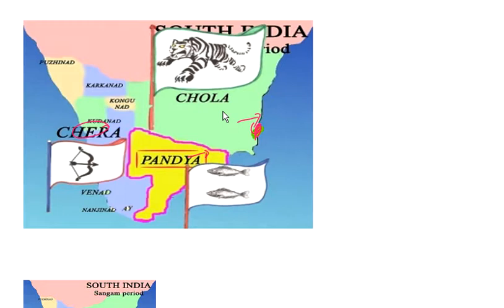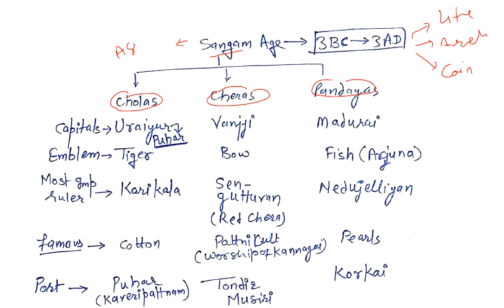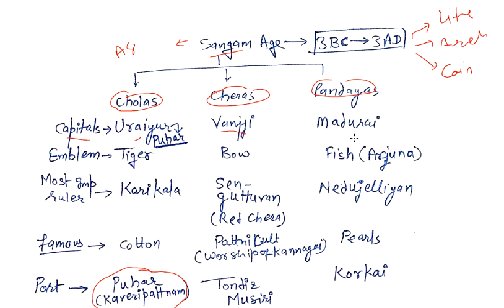Now let us discuss their capitals. The Chola capital was at Uraiyur, which was later shifted to Puhar. Puhar is also known as Kaveri Patnam, which was also a port on the Kaveri river. The Chera capital was Vanji, and the Pandya capital was Madurai.